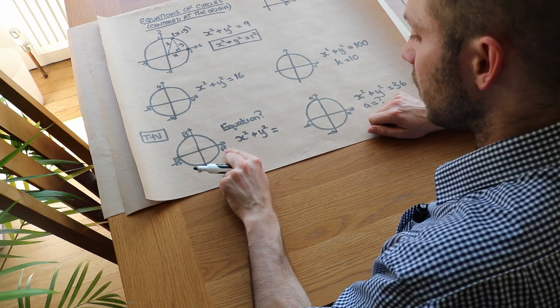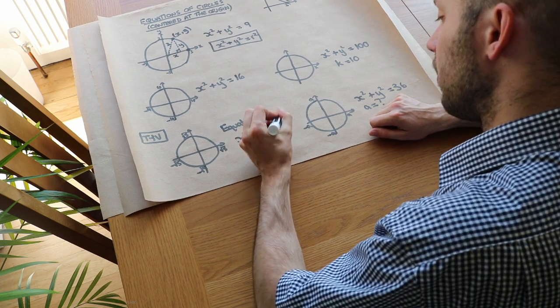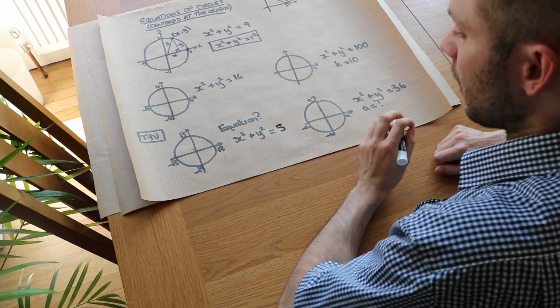Well, root 5 squared is 5, isn't it? So we just get that.